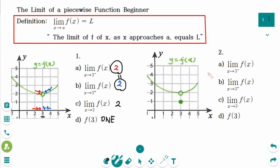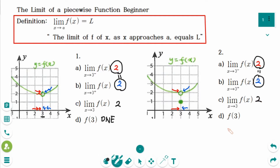This is the next question. Number a: The limit of f(x) as x approaches 3 from the left side — the y value is approaching 2, so the answer is 2. Number b: The limit of f(x) as x approaches 3 from the right side — y is approaching 2. Number c: The limit from the left-hand side is the same as the limit from the right-hand side, so the answer is 2. Number d: When x is exactly 3, the y value is 1.